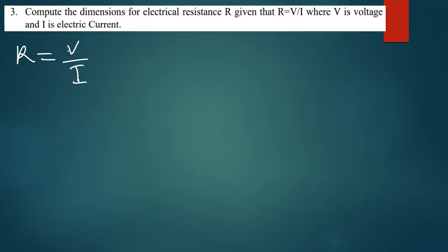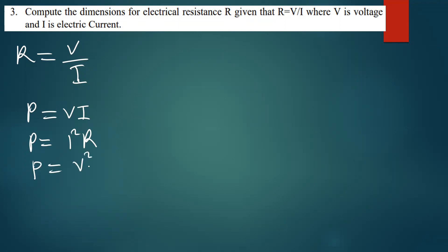We can only get the voltage from the formula for power. We know that power is equal to VI, and the same power can also be written as I squared R, and also as V squared over R.